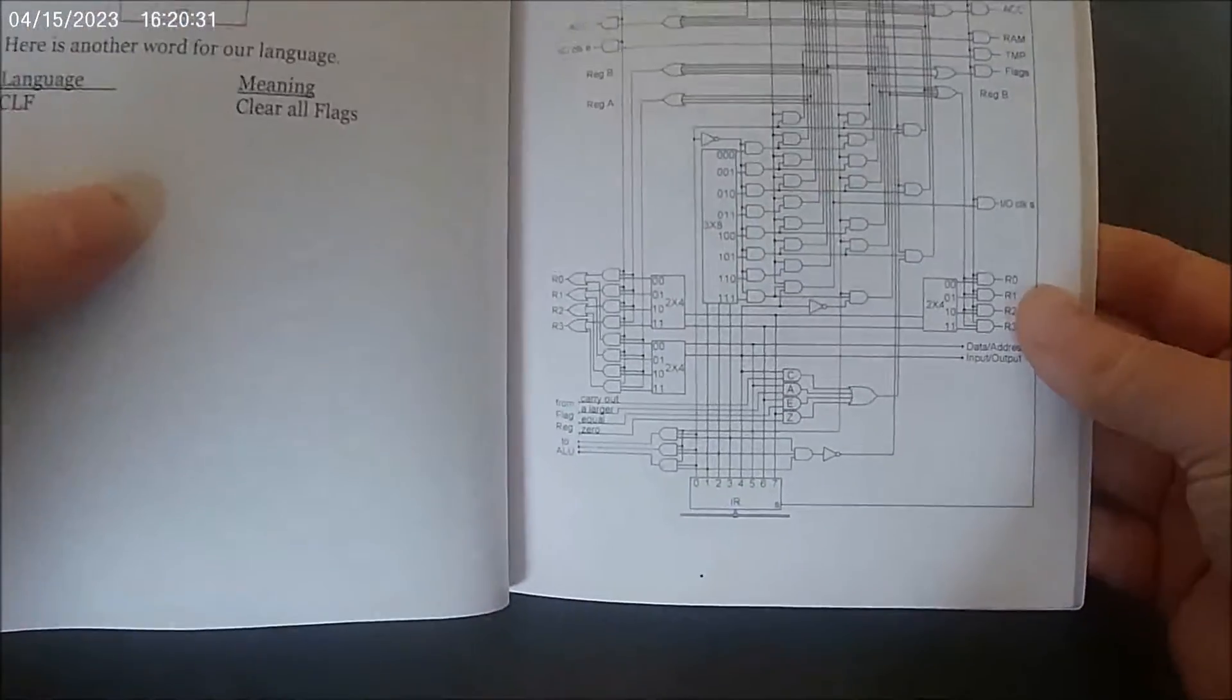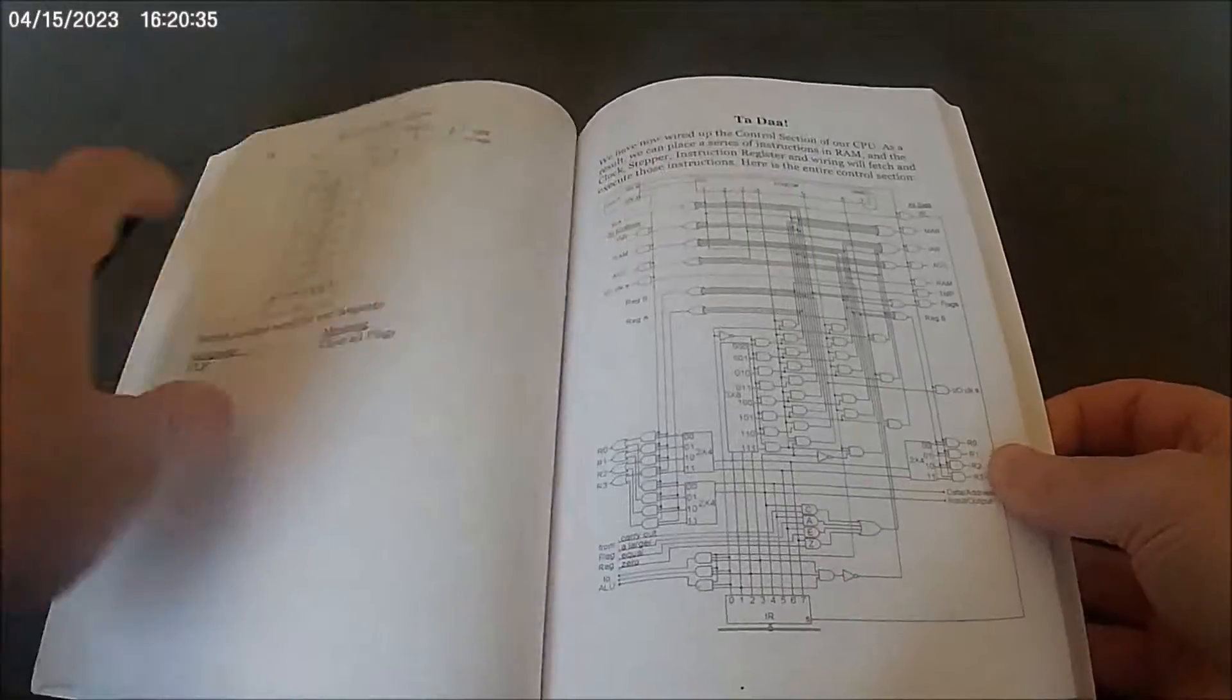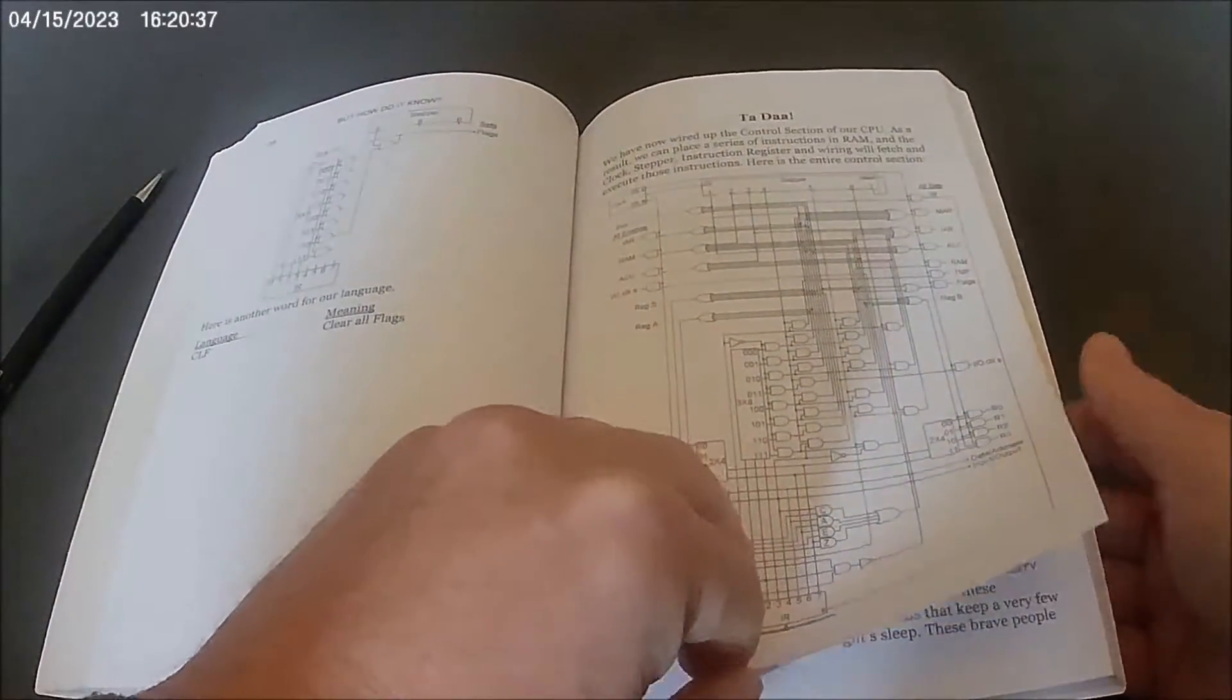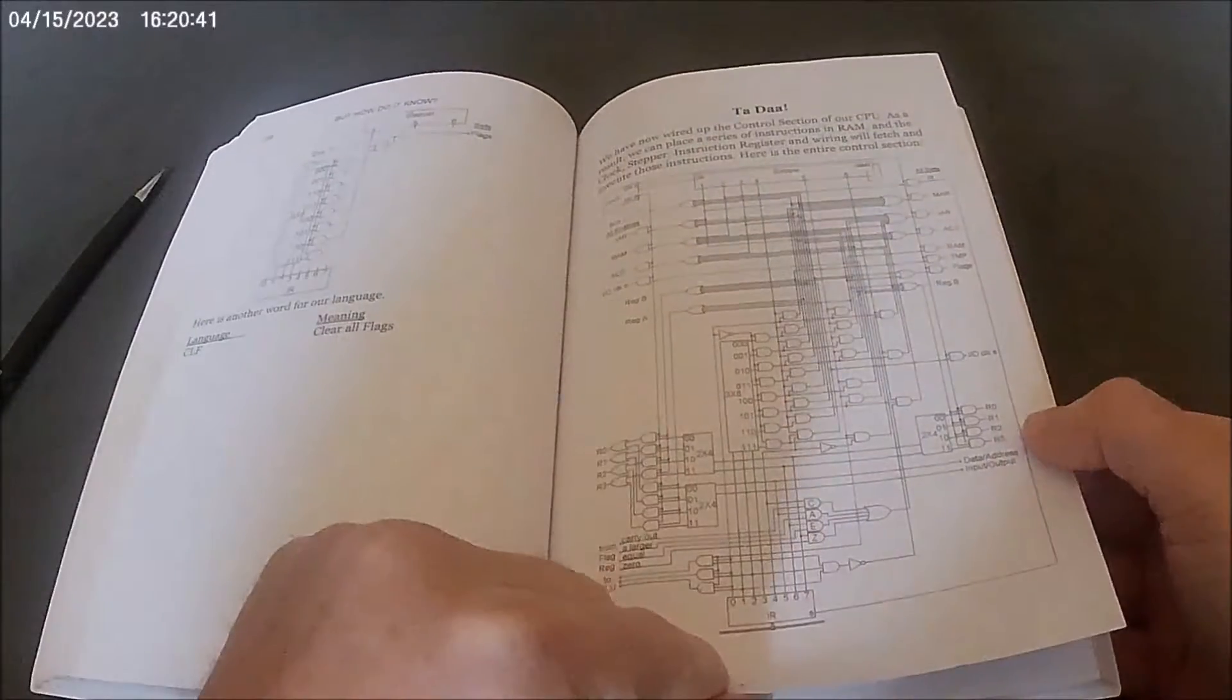And we're gradually building up an entire control unit one little step at a time. And we've got the jump if commands here, okay. And we've got a clear flag instruction, so that's the basic instructions. And then it builds up an entire unit here, the control unit. So although that looks complicated it is all described within the previous pages and you can build this and it will work.